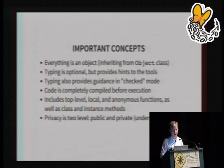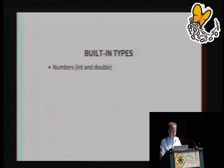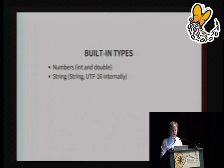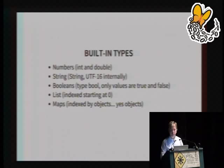Privacy is two-level: everything is public unless it begins with an underscore, in which case it can only be seen within its own library. The built-in types include all the common ones: numbers are broken into int and double; strings are capital String and UTF ready; booleans use type bool with only true and false as values; it has lists indexed starting at zero; it has maps indexed by objects — not just strings as keys, which leads to some interesting possibilities; and symbol is a string that's identical if it's equal.